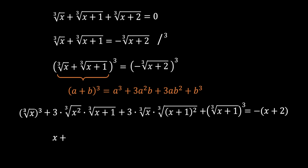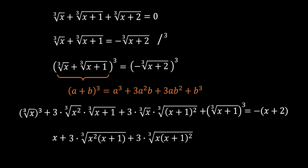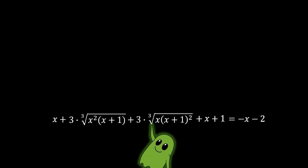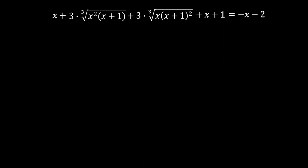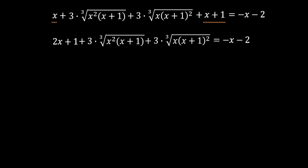Let's now simplify. On the left side, the first term: cancel the cube root and cube to get x. On the second term, group the cube roots to get 3·(cube root of x²(x+1)). Do the same for the third term. The fourth term: cancel cube root and cube to get (x + 1). On the right side, expand the bracket to get minus x minus 2. Now group x and (x + 1) to get (2x + 1).